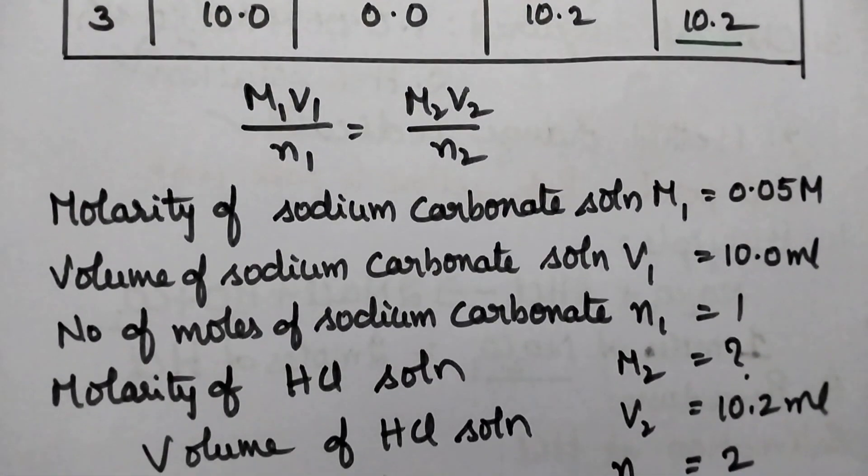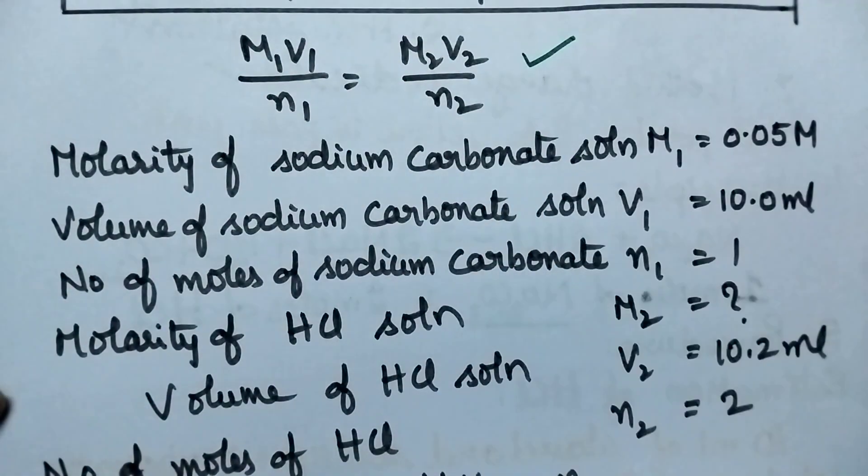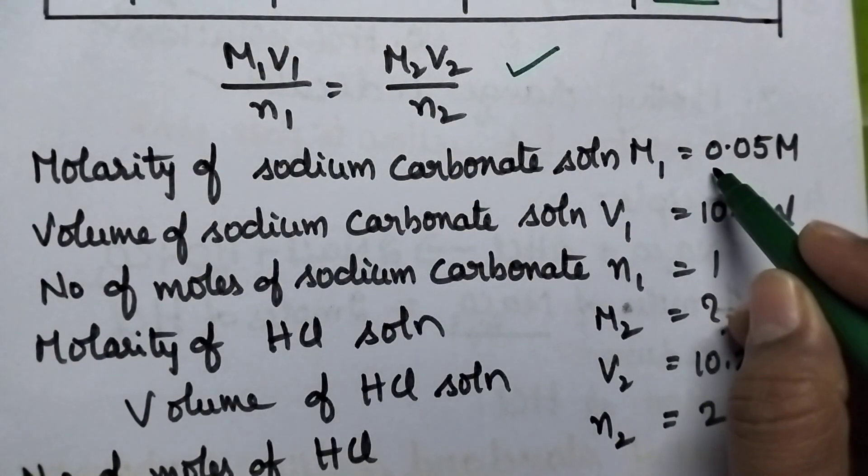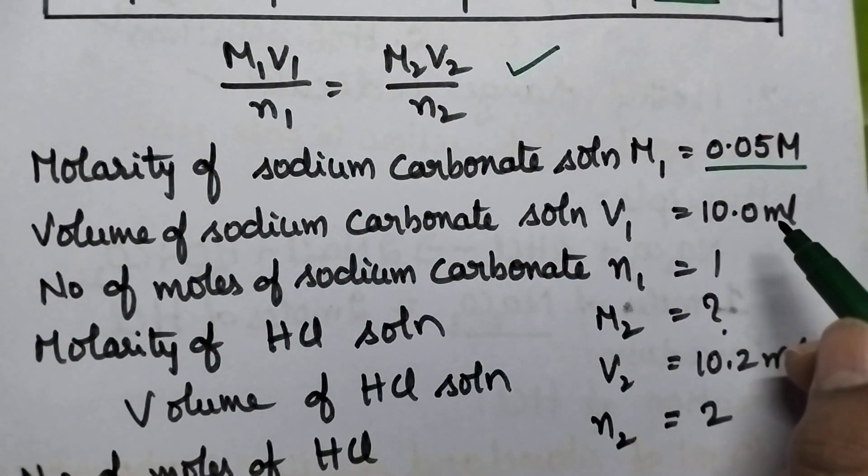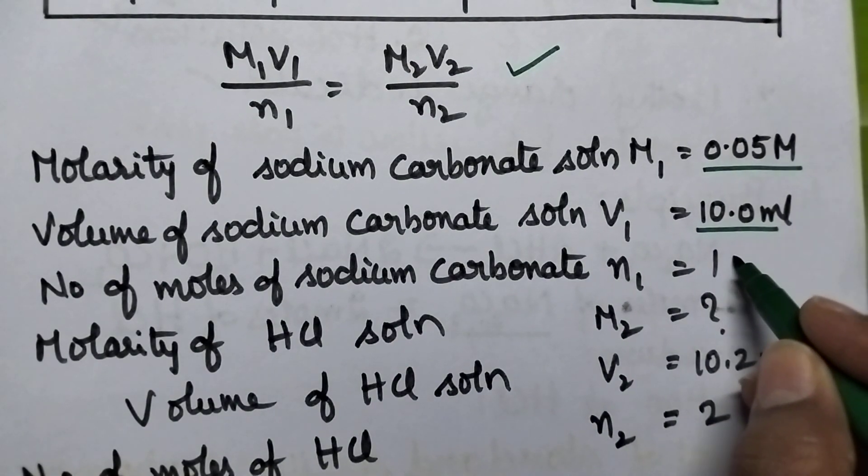Coming to the formula used in this titration, M1 V1 by N1 is equal to M2 V2 by N2. Molarity of the sodium carbonate solution M1 is 0.05 molar. Volume of the sodium carbonate solution V1 is 10 ml. Number of moles of sodium carbonate is 1.